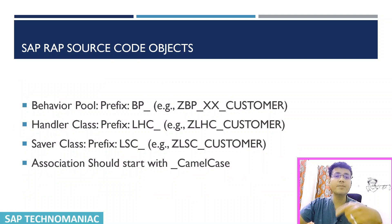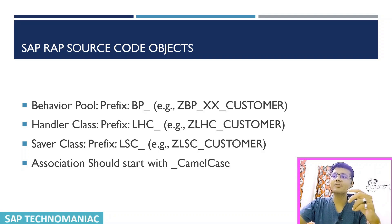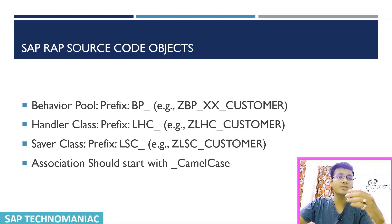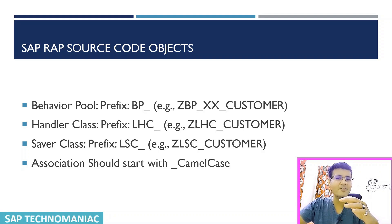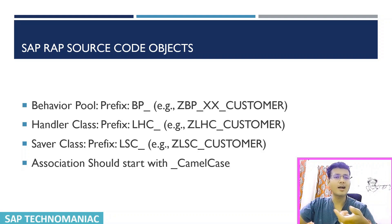The next topic is internal naming in behavior definitions. Whenever we create a new class, always use ZBP so we can understand this class is created for the RAP behavior pool. For local classes, for the handler class use ZLSC, and for the saver class also use ZLSC. For association names — as discussed in the CDS series — always start with an underscore, use camel case, and don't use underscores in between.